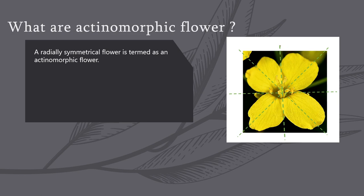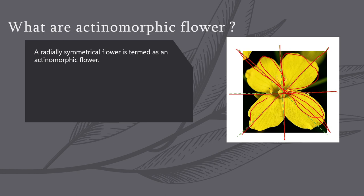Here you can see we can divide this flower by passing a vertical plane, and you will get two equal halves — two petals on the left hand side and two petals on the right hand side. Note: this is not a chilli flower, this is a Brassica flower. You can also pass a horizontal plane and get two petals on the top and two petals on the bottom. You can even pass a plane diagonally and again get two equal parts — one petal and two half petals on each side.